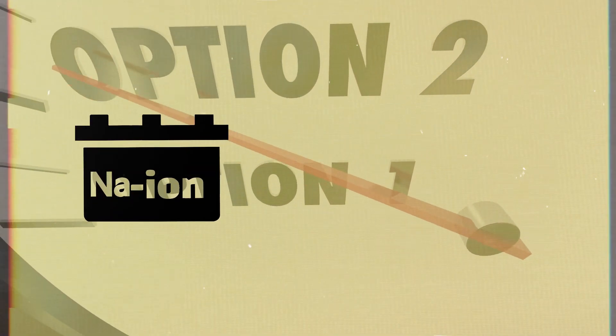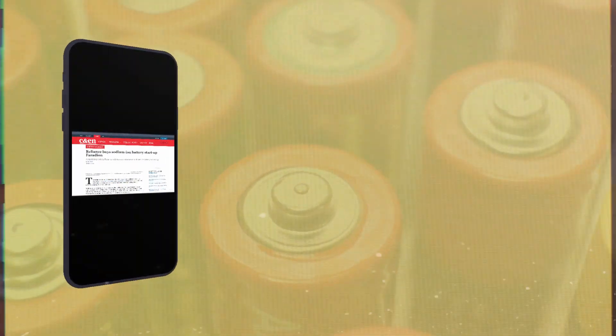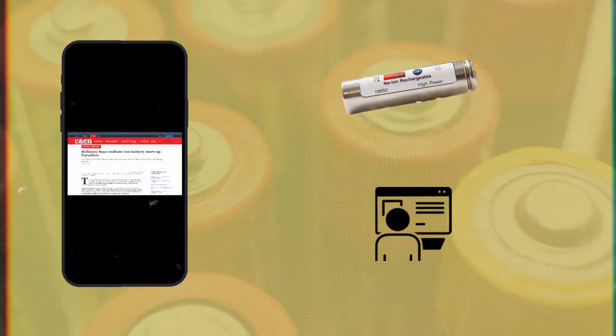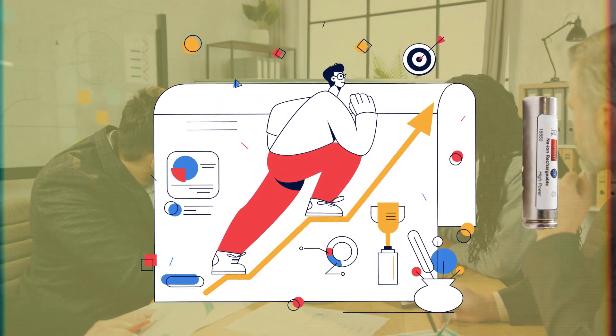Sodium-ion batteries are quickly becoming an alternative to lithium-ion batteries. Industrial leaders in battery production, CATL and Reliance Industries, are racing towards making sodium-ion batteries more mainstream. The goal is to quickly lead these emerging batteries into mass production.